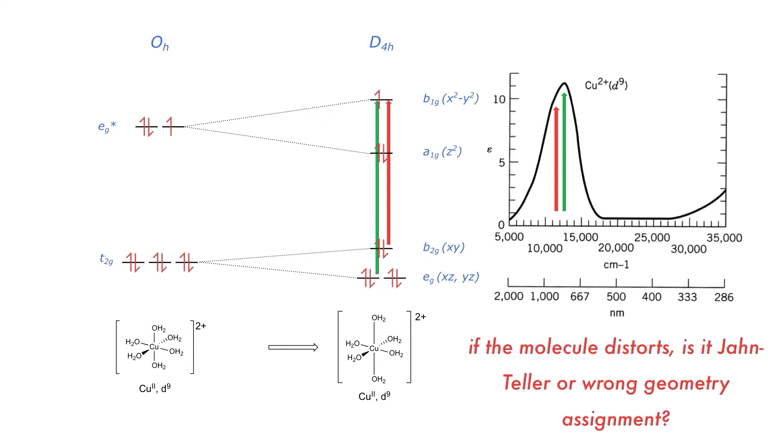Now this is where there is a problem with the Jahn-Teller theorem. If the geometry distorts, then was the complex ever actually octahedral, or was it just a case that the point group was assigned incorrectly? I'll leave that up to you to decide.